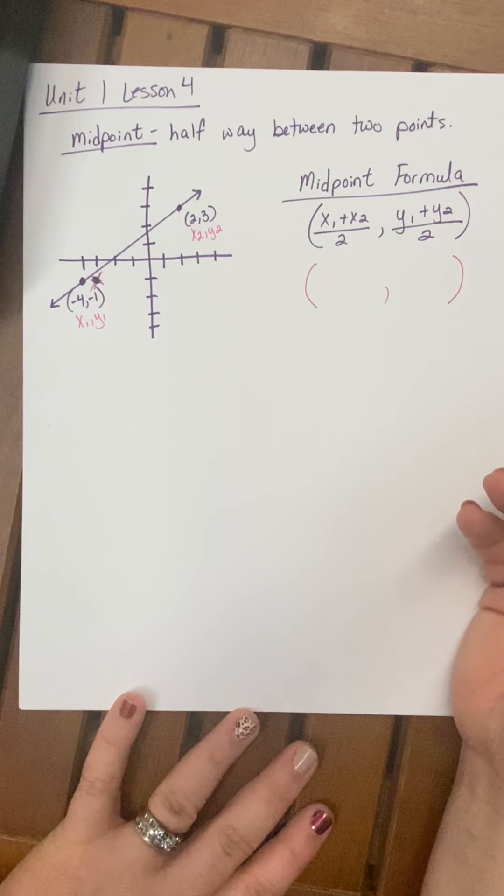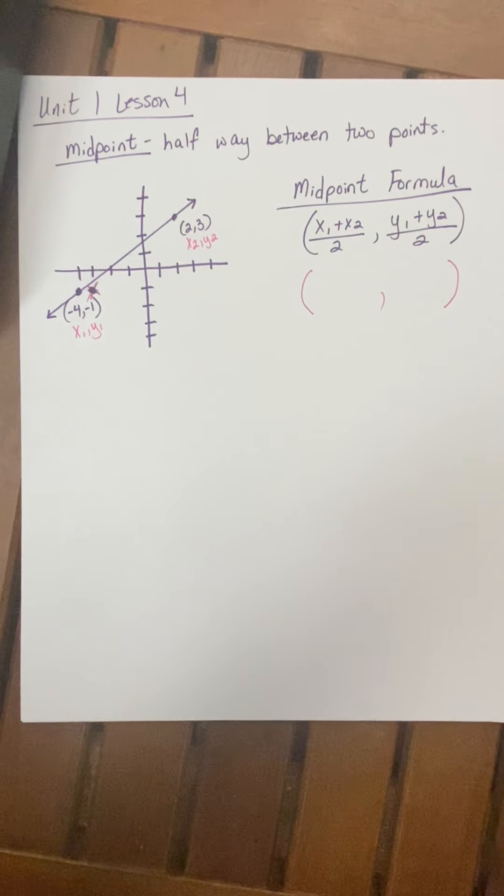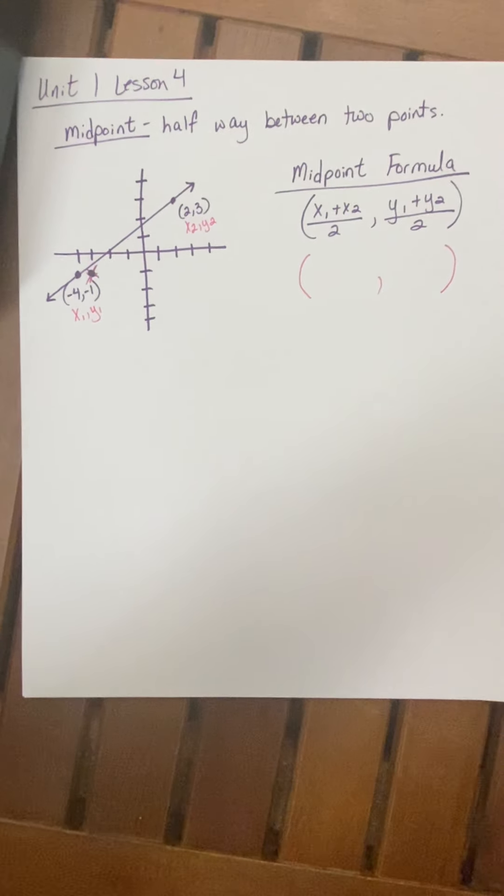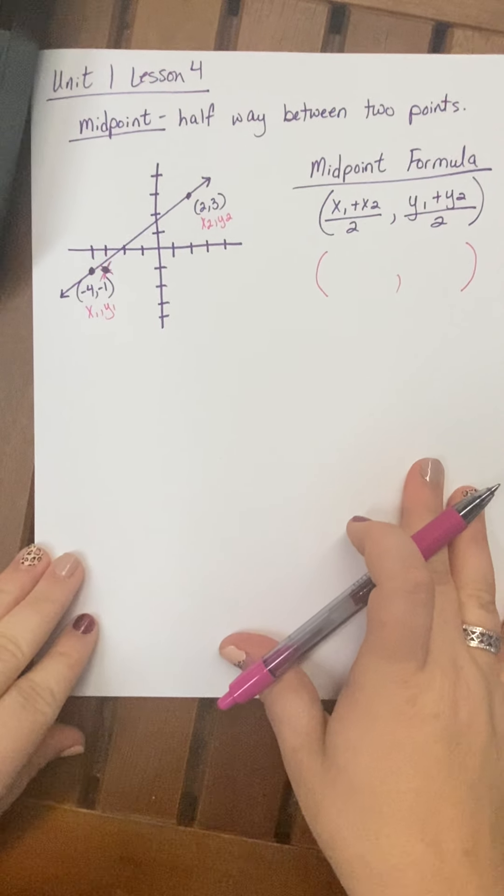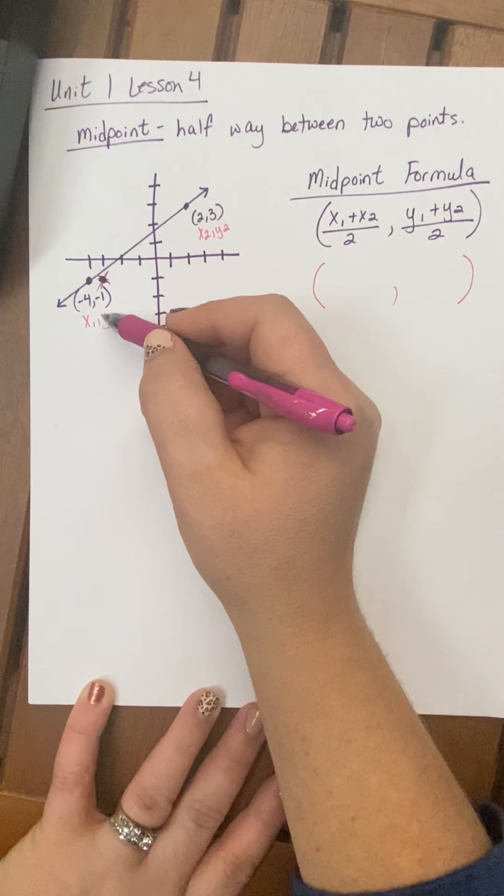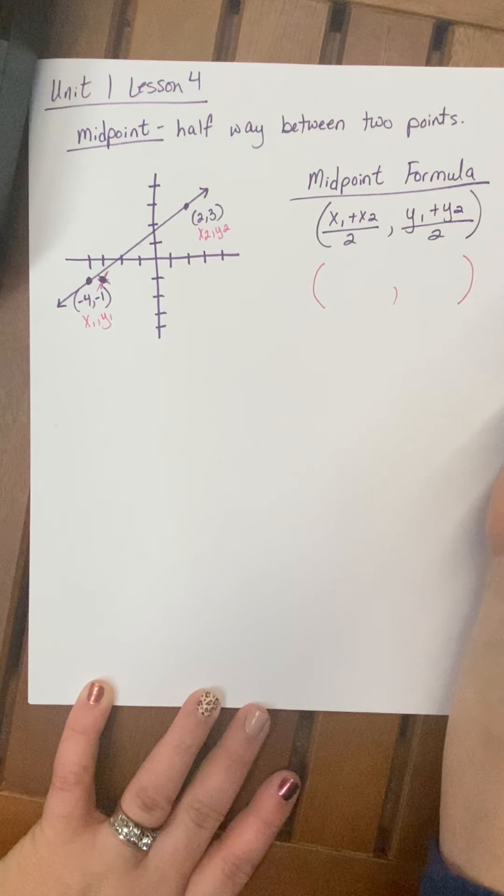And it is important to just go ahead and label those. Let me see if I can fix my camera so that it's not wiggling as much. Make it a little tighter. There we go. It really doesn't matter which one we make as 1 and 2. So I'm going to make this point 1 and this point 2.